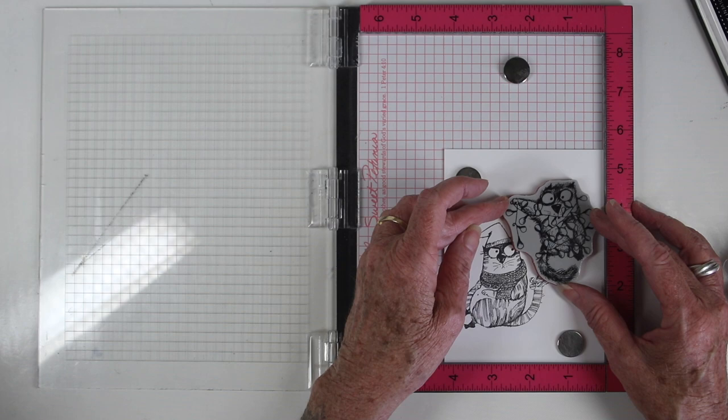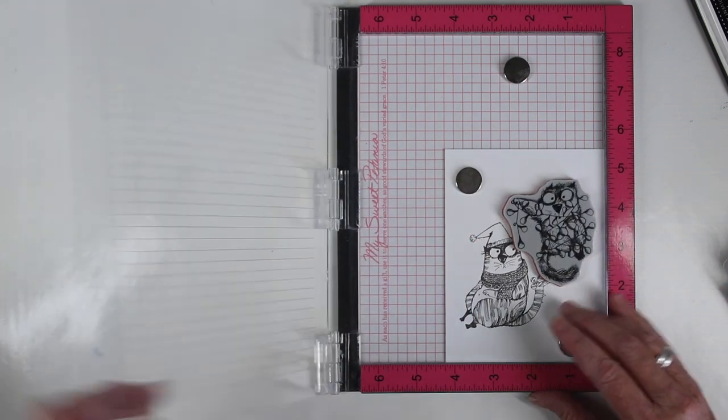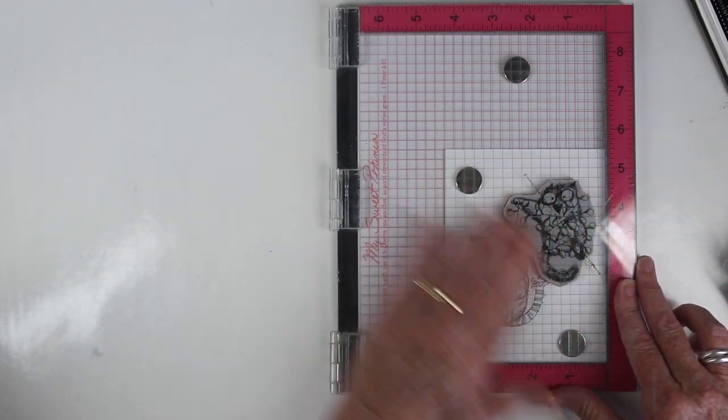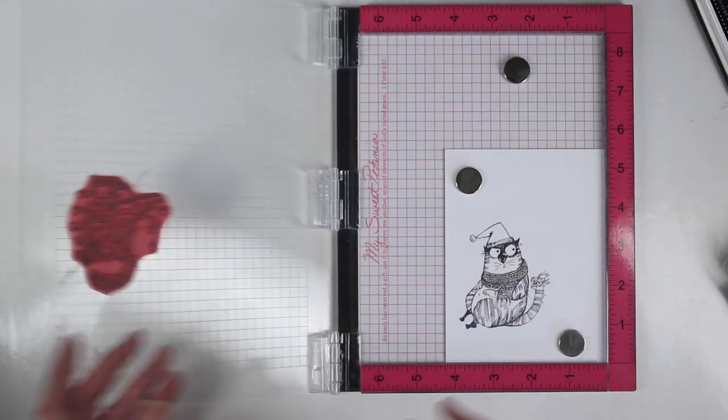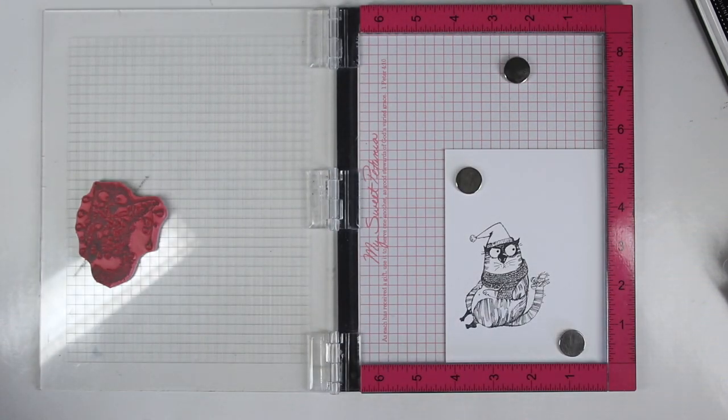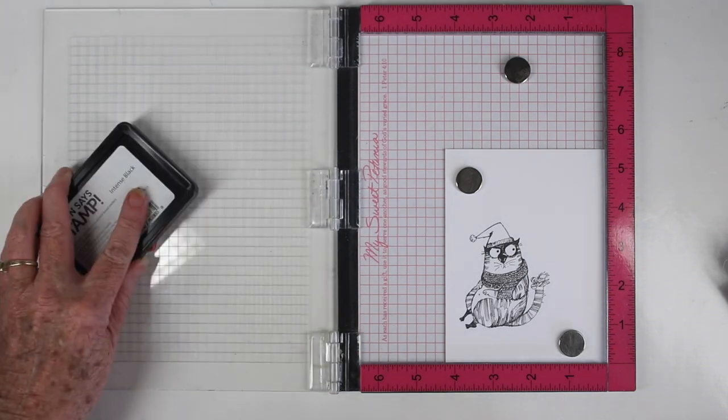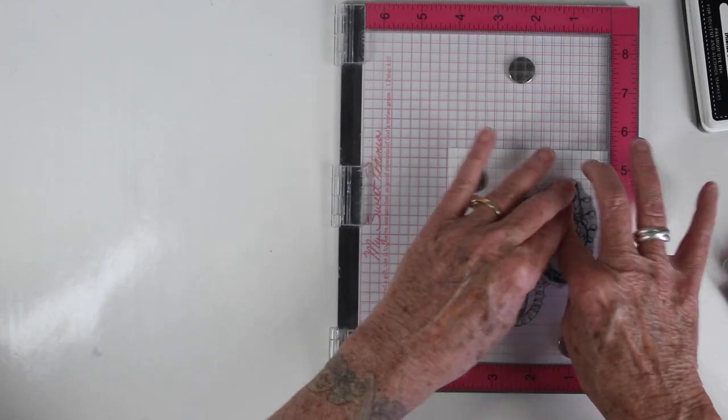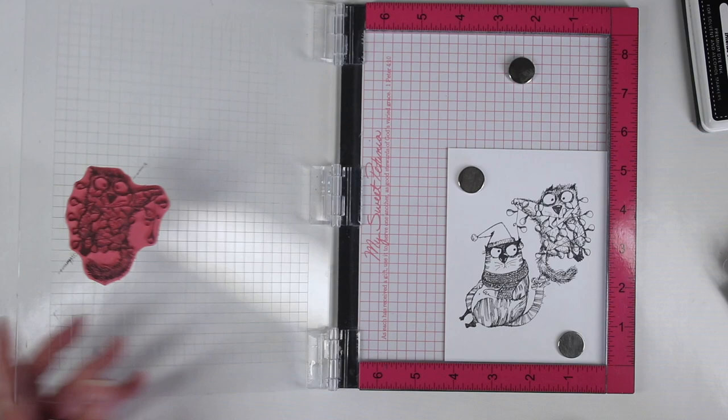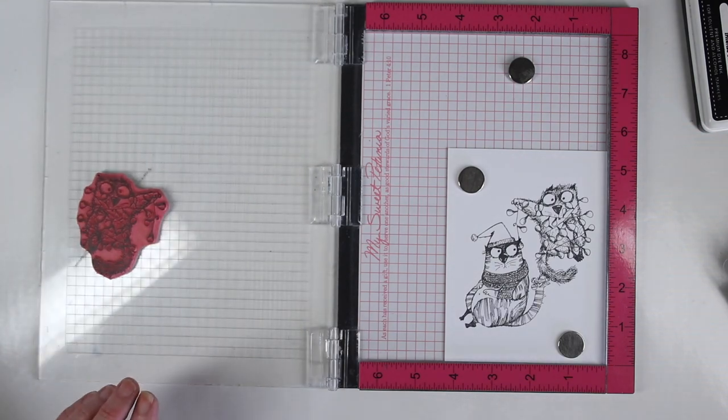Next I'm placing my other cat. This one's holding all those Christmas lights and I'm placing them to where one of those lights is just about to touch the other cat's face. And again I'll be using the Simon Says Stamp Intense Black Ink and I'll ink this up really well. Give that some really good pressure with my fingertips and now I have both images.